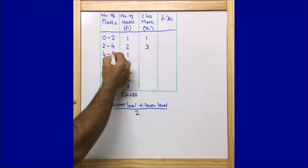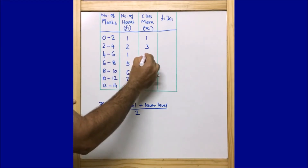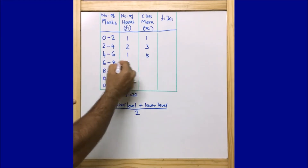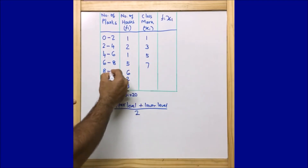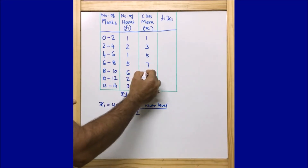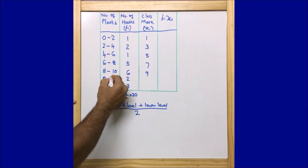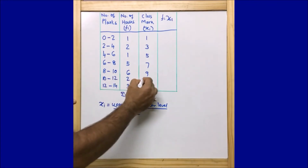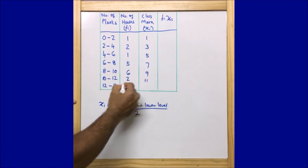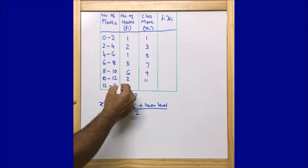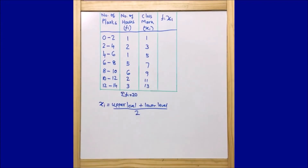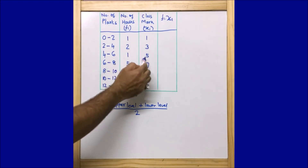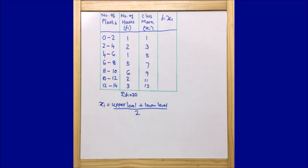Continuing: (8 + 6) / 2 = 7; (10 + 8) / 2 = 9; (12 + 10) / 2 = 11; and (14 + 12) / 2 = 13. So the class marks xᵢ are: 1, 3, 5, 7, 9, 11, 13.